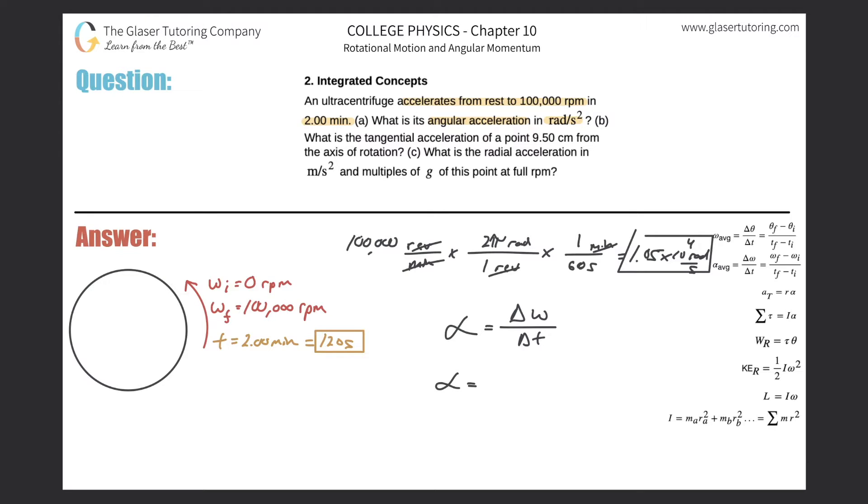So the angular acceleration is, remember, the final angular velocity is 1.05 times 10 to the fourth, minus the initial which was zero. Zero RPM is the same as zero radians per second, so no conversion is necessary. So minus zero, all divided by the time, which we calculated to be 120 seconds. I'm going to use the exact value from before, which is 1.0471, divided by 120. So we get 87.3 radians per second squared. That's the value of the angular acceleration. That is letter A.